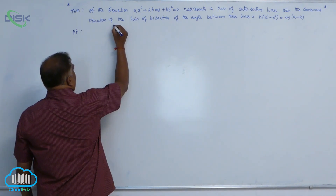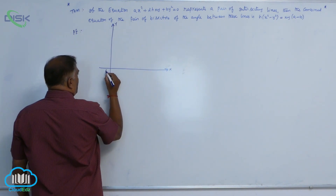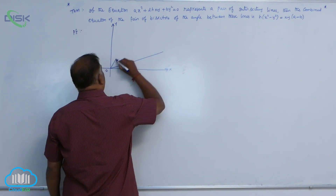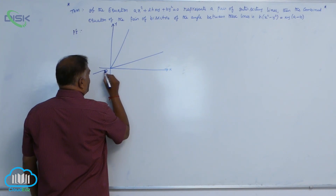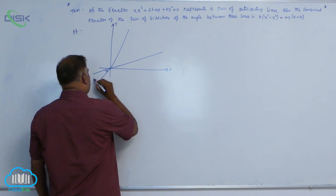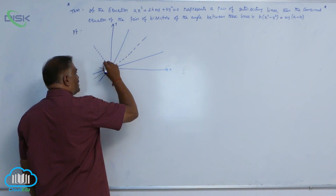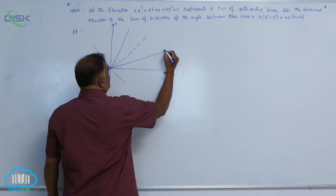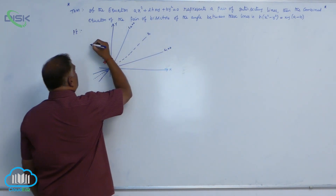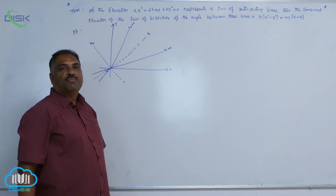Let us draw the diagram. Here you can see the x-axis, y-axis, and the origin. Straight line number 1 and straight line number 2 pass through the origin and can be extended. The angular bisectors are shown as dotted lines — the first bisector and the second one. L1 and L2 indicate the straight lines; B1 and B2 indicate the bisectors.